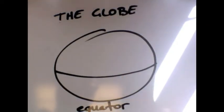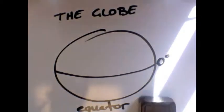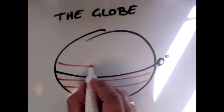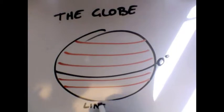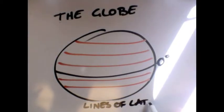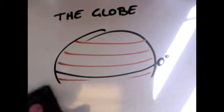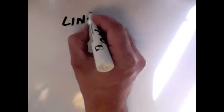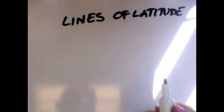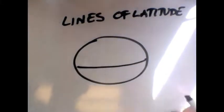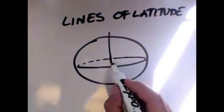All right, so the next thing we're going to look at is the globe. The globe is divided in half, usually at the equator. That's zero degrees. The equator is an example of a line of latitude, and lines of latitude are the horizontal lines that we use to separate the globe.